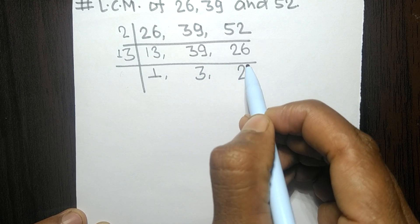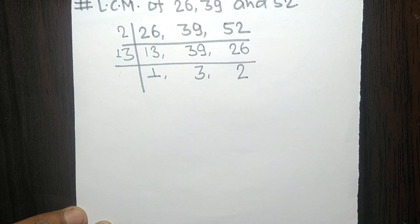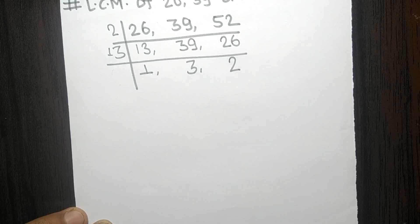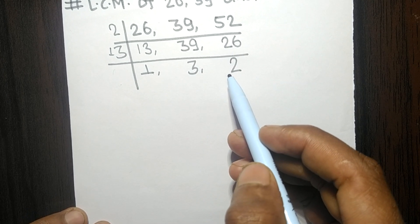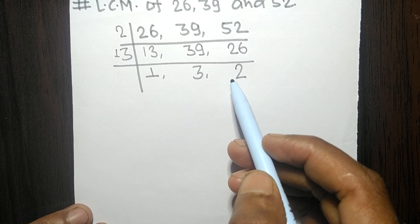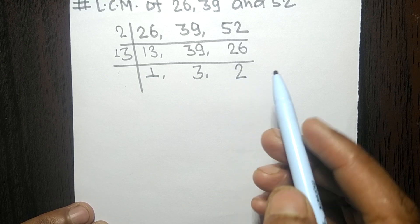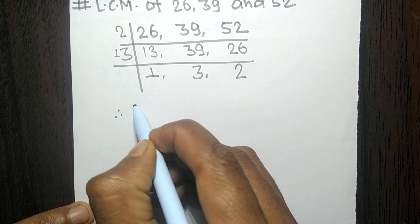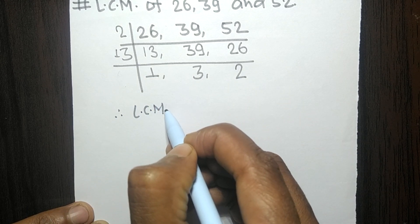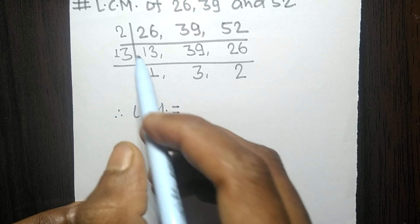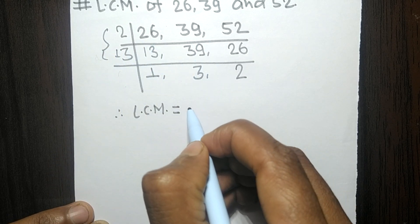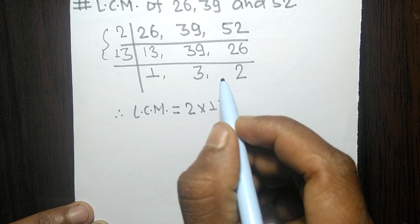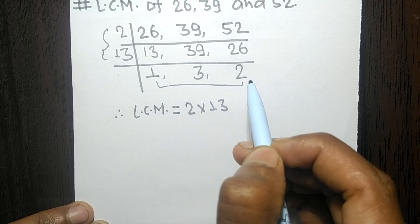So now the numbers 1, 3, and 2 are not exactly divisible by the same number. Therefore its LCM is equal to, from this side it is 2 times 13, and from this side we choose the numbers greater than 1, that is 3 and 2.